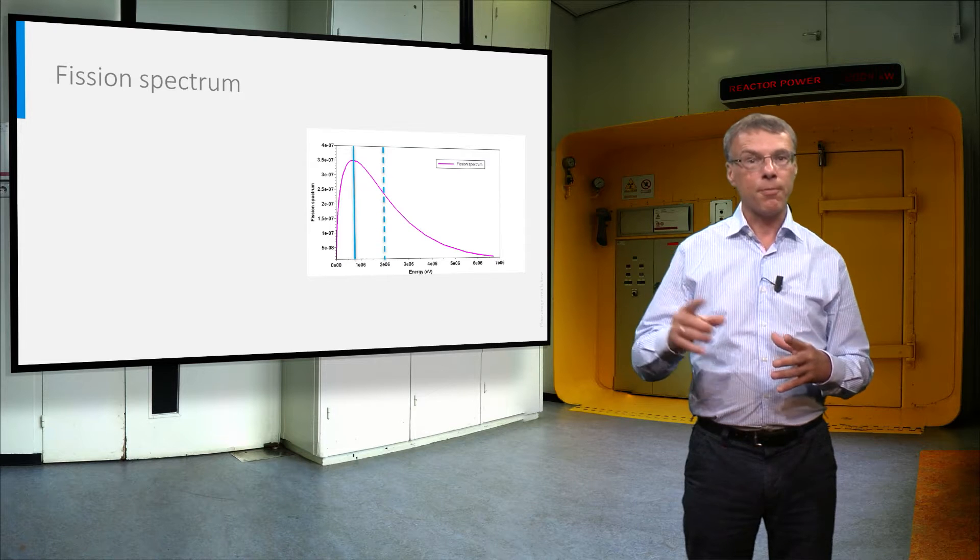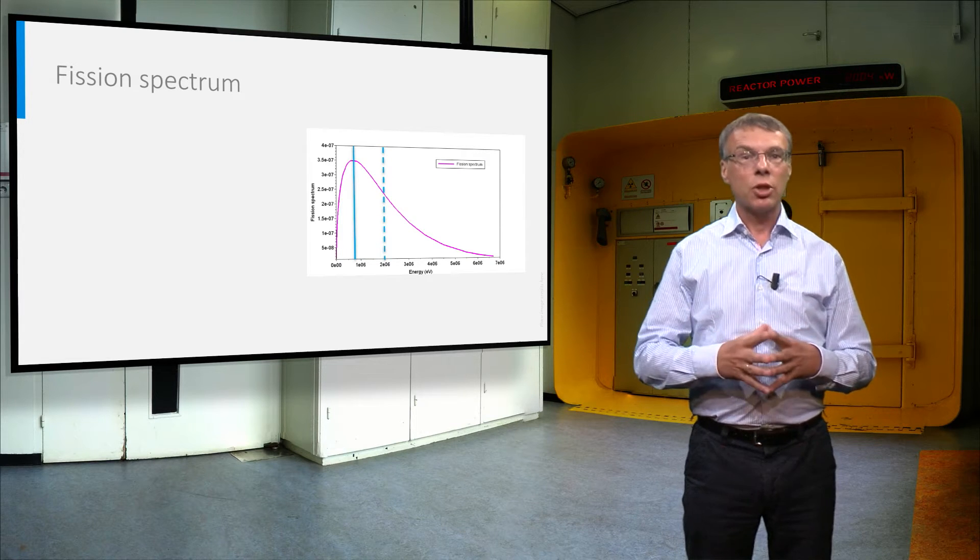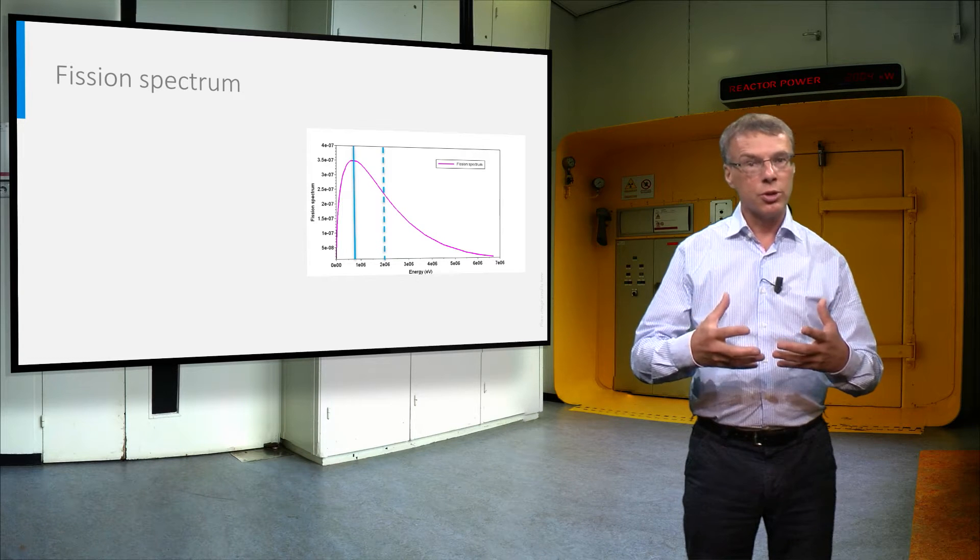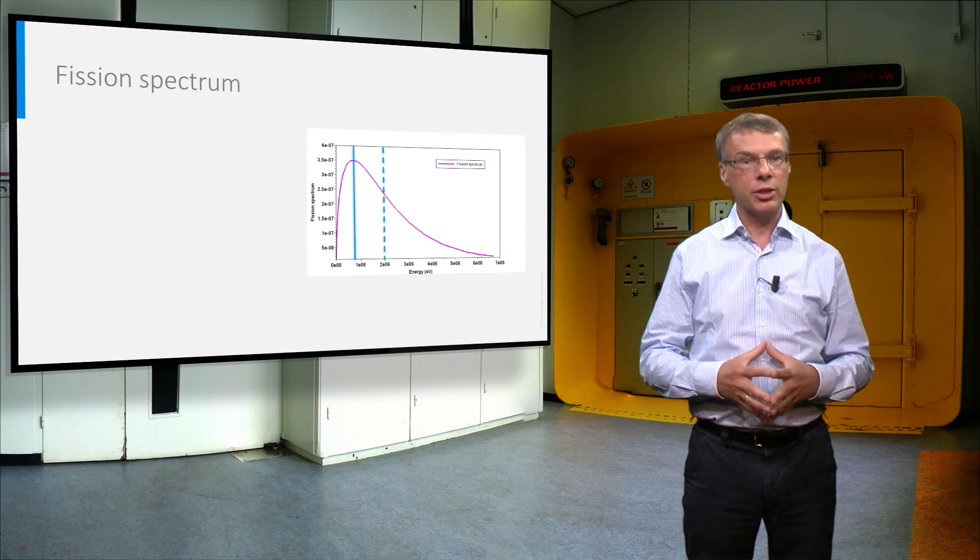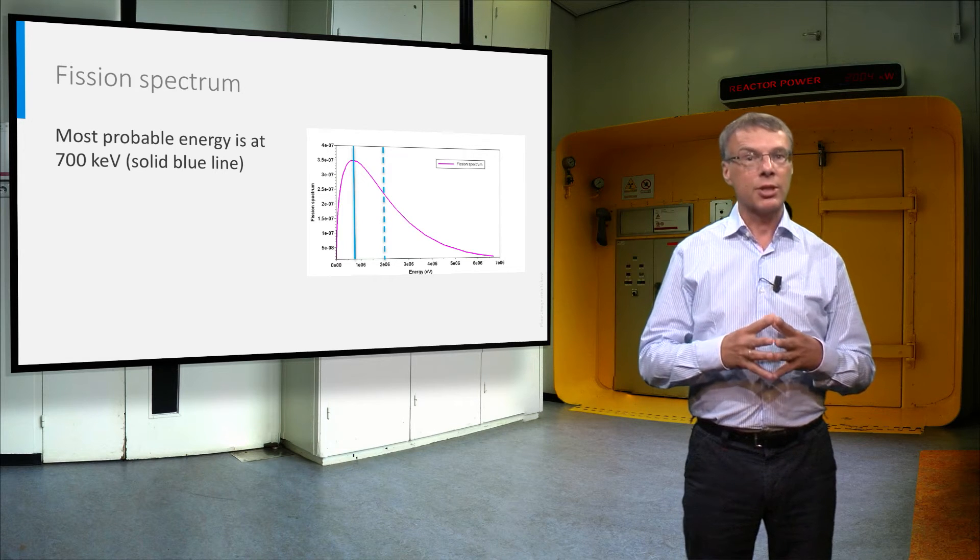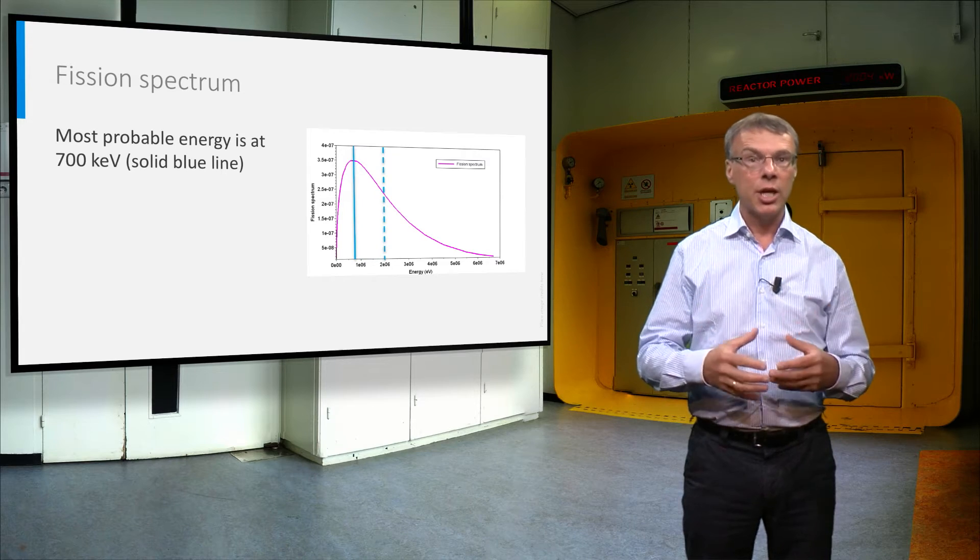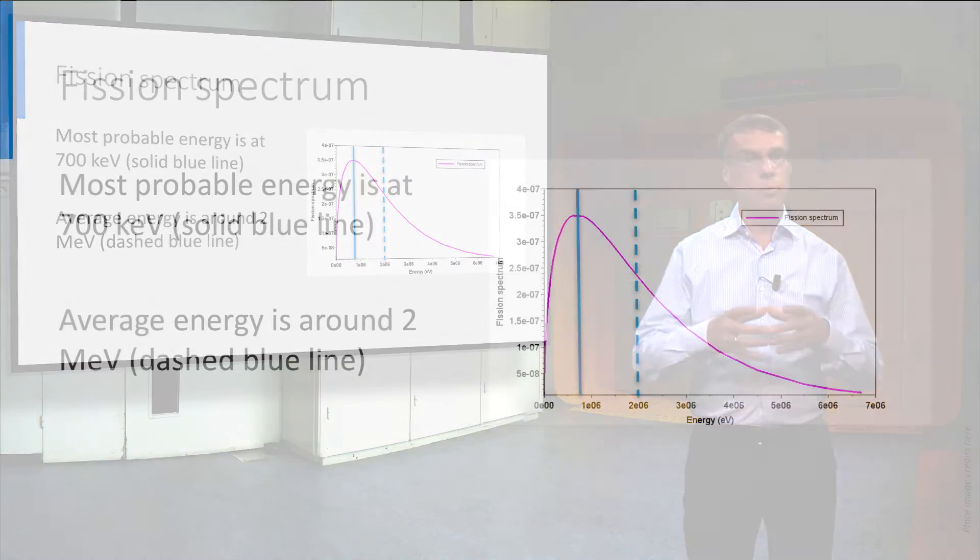But first we have to explain the characteristics of fission neutrons. This plot shows the energy distribution of the three neutrons when they are released in a fission event. The most probable energy is at around 700 keV, while the average energy reaches a value of about 2 MeV.